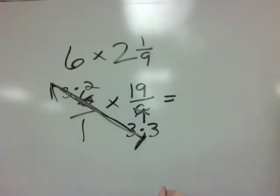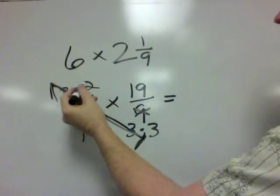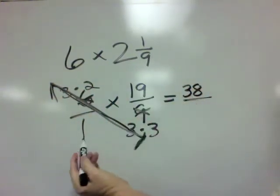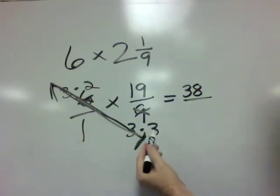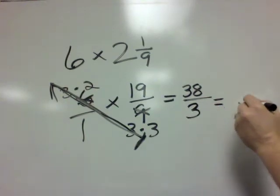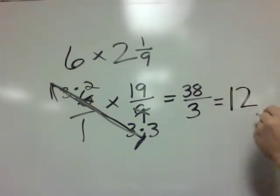So really, we end up with 1 times 2 times 19, which is 38, over 1 times 1 times 3, which is 3. And that equals, oh my goodness, what does it equal? 12 and 2 thirds.